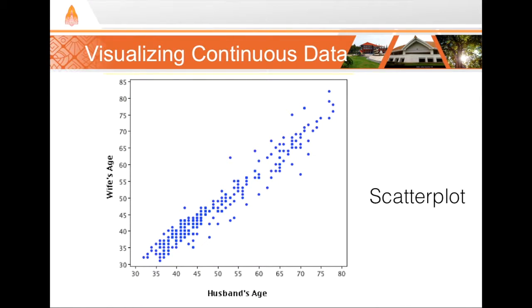And finally, if we're plotting results that have two continuous data points, such as the husband's age and the wife's age in a marriage, we can use a scatter plot. A scatter plot is useful for identifying any relationship between two continuous variables. In this case, we can see that there is a strong positive relationship between a wife's age and a husband's age.